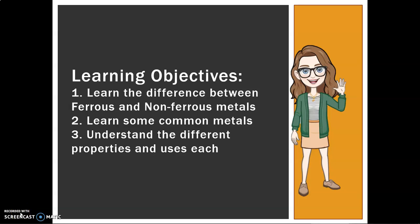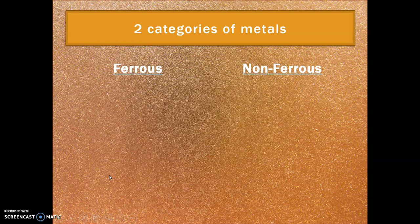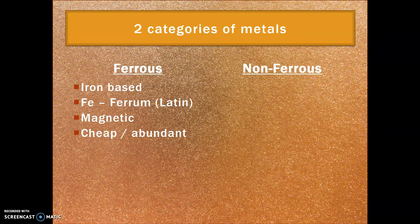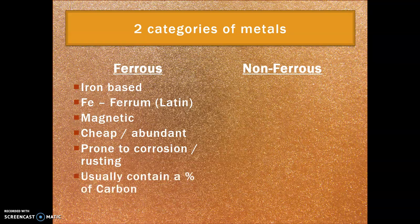Welcome back. Today we are looking at metals, specifically ferrous and non-ferrous metals, some of the common metals from each, and understanding the different properties and uses. Ferrous metals are iron-based. From the periodic table the symbol is Fe, from the Latin 'ferrum' — that's why they're called ferrous. They are magnetic, cheap and abundant, which is why we see them everywhere, but they are prone to corrosion — an oxidation reaction with elements in the air — so they tend to rust and need to be coated.